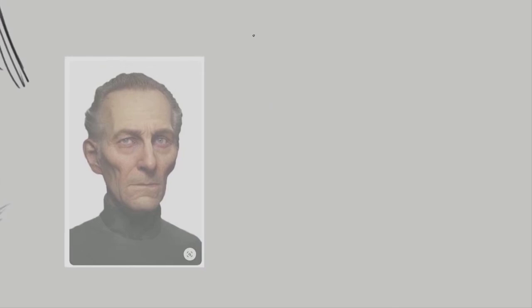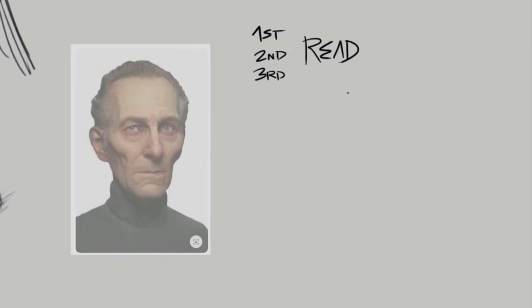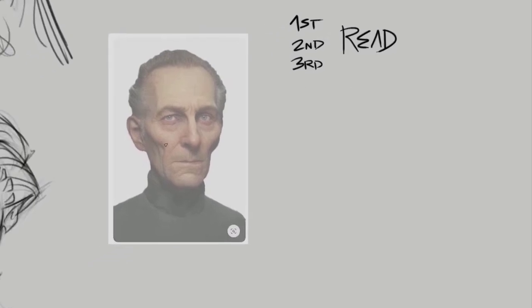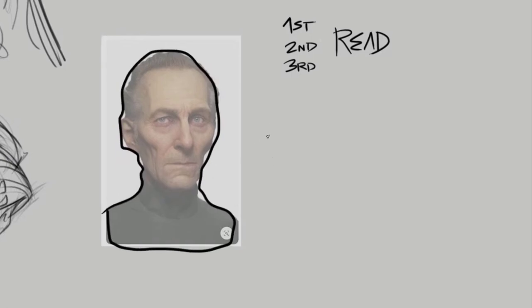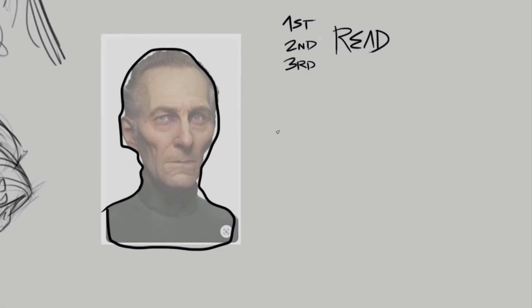There's this idea of first, second, and third read. First read would be the first big shape. If you look at it, it's like this first big shape you see. Our brains perceive this big shape, big silhouette first. It's not even conscious — we do it unconsciously.